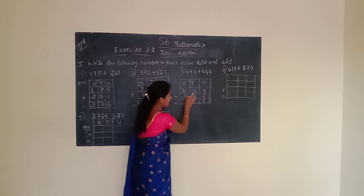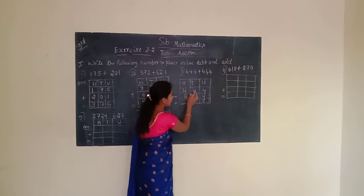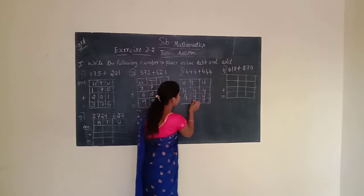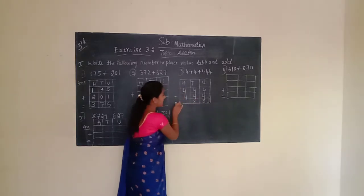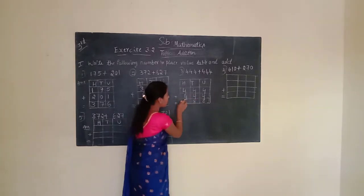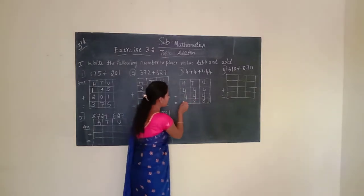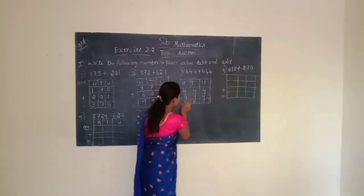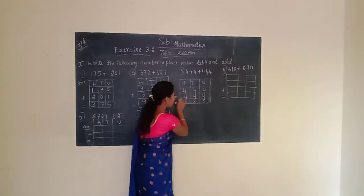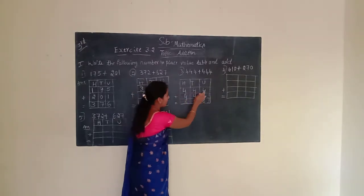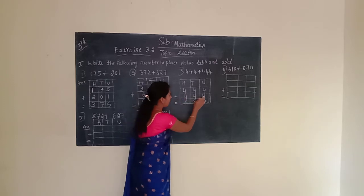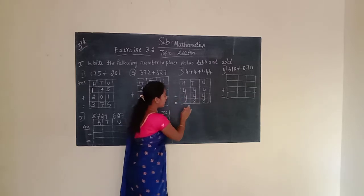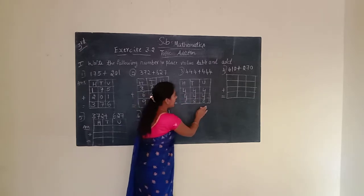Next, move to the tens place. Tens place is having 4 and 4. 4 plus 4 is 8. We have to write 8. Next, hundreds place. Hundreds place is having 4 and 4. 4 plus 4 is 8. We have to write 8. Given number is 444 plus 444 equals 888.